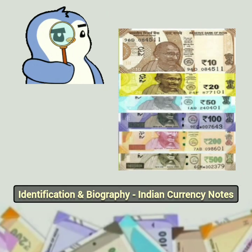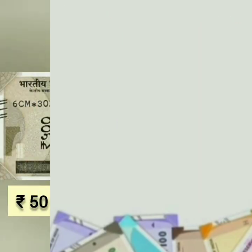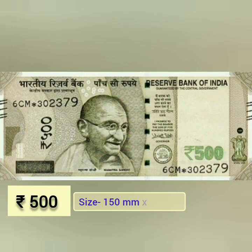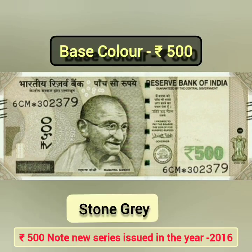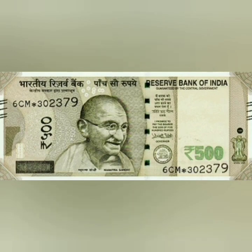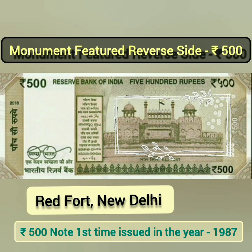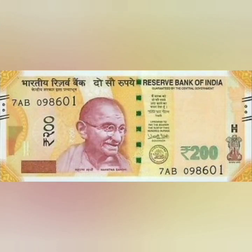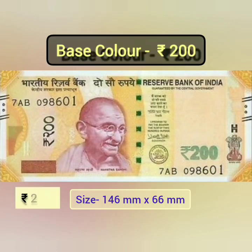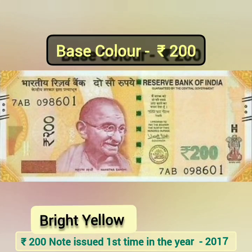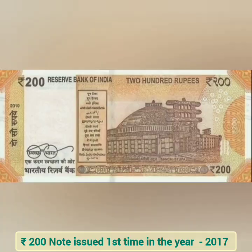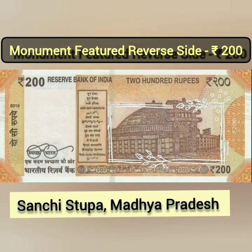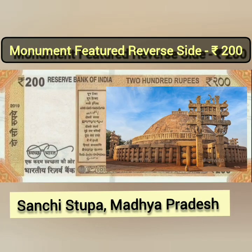Identification and biography of the Indian currency notes. This is a 500 rupee note. Its base colour is stone grey. The reverse side features a depiction of the Red Fort located in New Delhi. This is a 200 rupee note. Its base colour is bright yellow. The reverse side features a depiction of the Sanchi Stupa located in Madhya Pradesh.